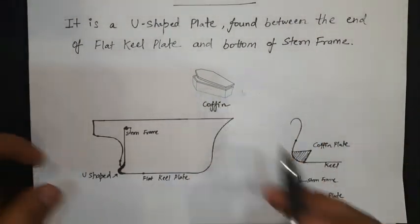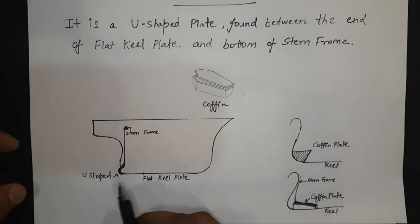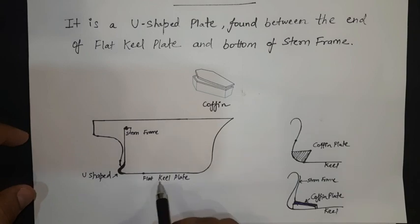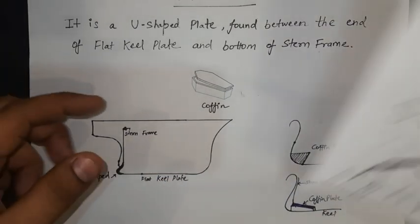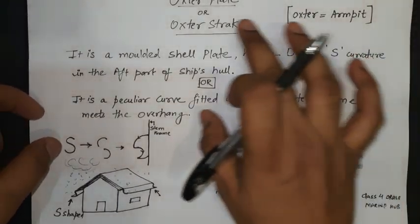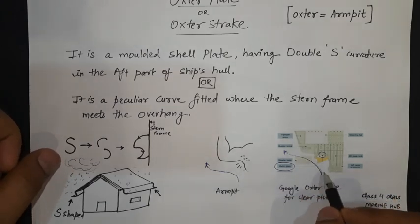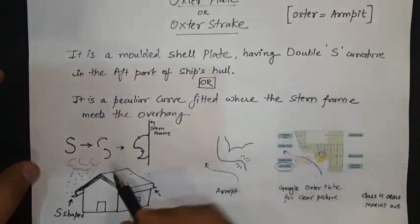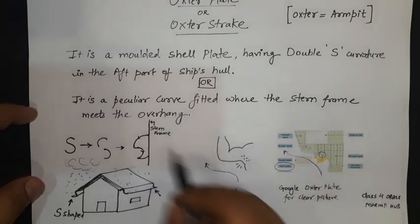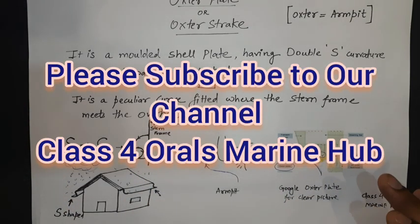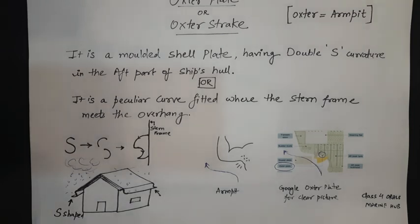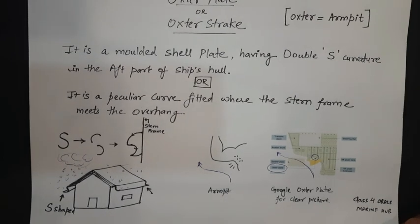Recollecting: the coffin plate — the name suggests coffin, it looks like a coffin connecting the stern frame and the keel, it is a U-shaped plate connecting the stern and the flat keel plate, located on the aft side. And lastly, the oxter plate — oxter means armpit, and the aft of the ship is also shaped like an armpit. It is a molded shell plate having double S curvature, connecting the stern frame to the overhang. These are the basic definitions to be stated before the surveyor. If the surveyor asks for a drawing or diagram, now you can easily explain.